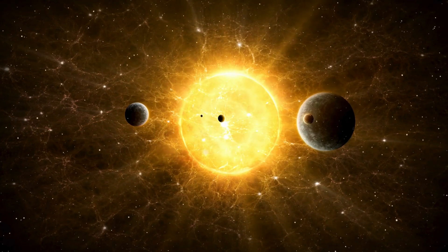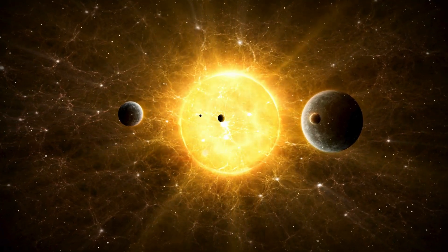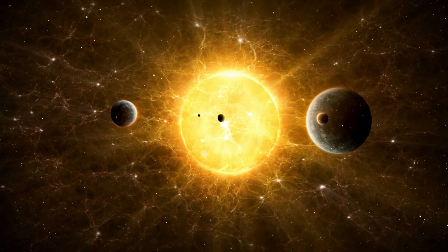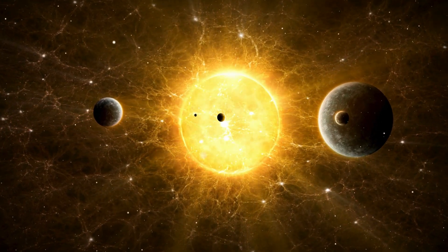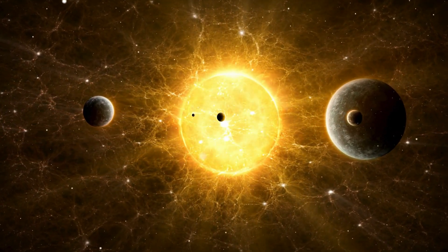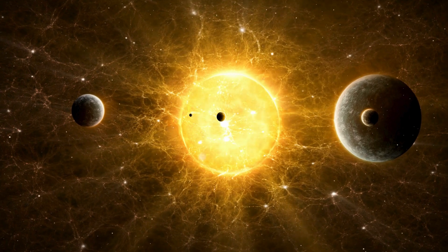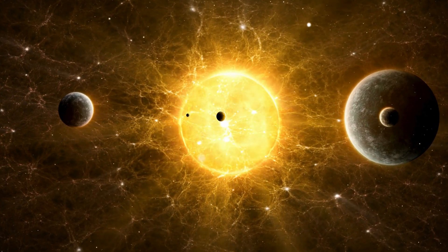Interestingly, planets do not twinkle as much as stars. That is because planets are much closer to us and look larger in the sky. The light from planets does not bend as unevenly as the light from distant stars. So, the light appears steadier.